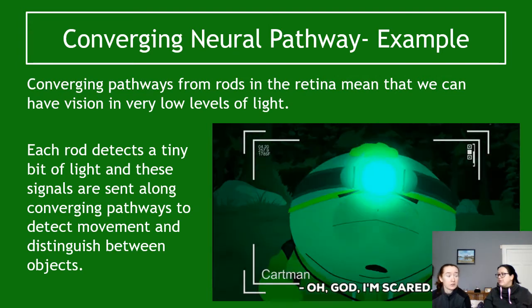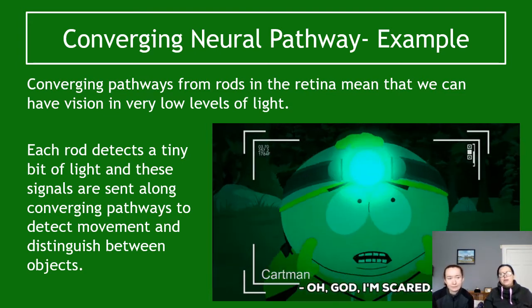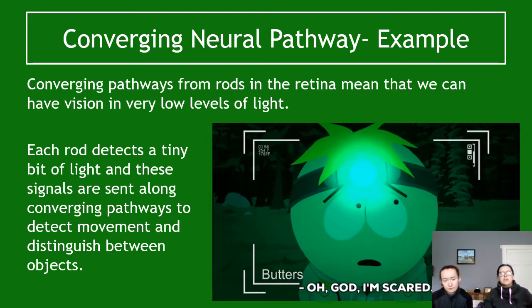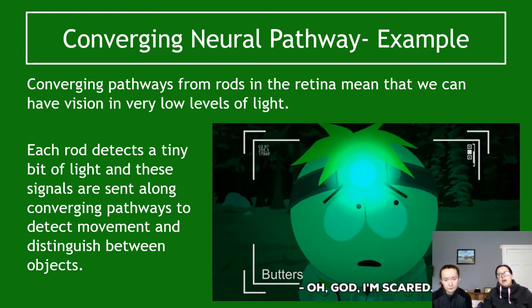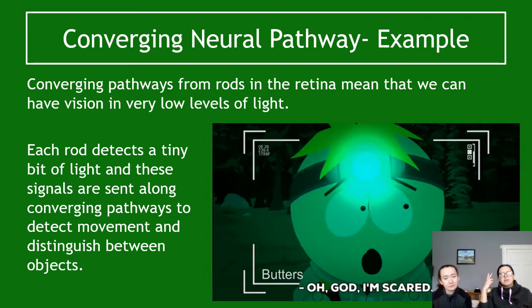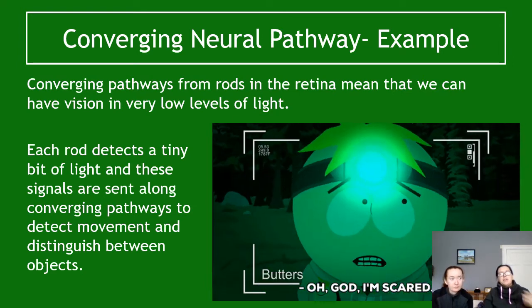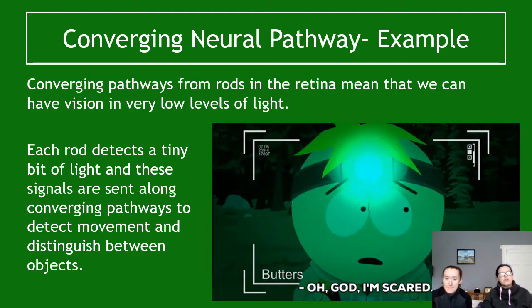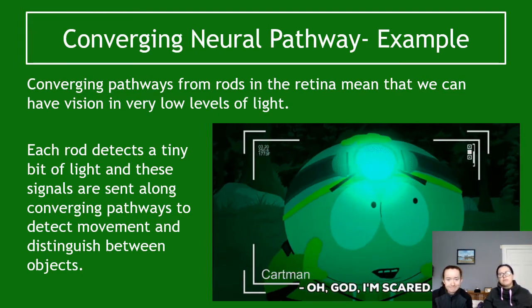It's worth noting it doesn't just need to be two neurons — it can be three, four, five, or any number converging together. An example (which you don't need to give in an exam) is seeing in low levels of light. Converging neural pathways from the rods in the retina mean we can have vision in very low light — each tiny neuron picks up a tiny signal and passes it down the main optic nerve, allowing us to detect movement and distinguish objects, which is useful for survival.